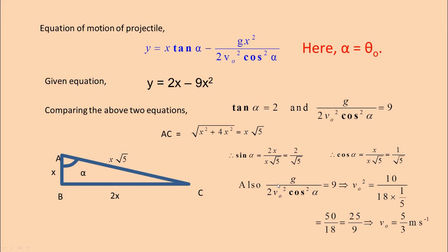Then also from this, g by 2v₀ square cos square α is 9. We want to find v₀ also, right. So v₀ is equal to—9 will come to this side. But g is given as 10, so 10 by 2 into 9, which is 18, cos square α. Because you know cos α is 1 by root 5, cos square α is 1 by 5, which will be this 5. So this 5 will go to the numerator, 50 by 18. Simplify by 2, cancel by 2: 50 by 2 is 25, 18 by 2 is 9. So 25 by 9. Therefore this is v₀ square, so v₀ will be square root of 25 by 9, which is 5 by 3 meter per second.